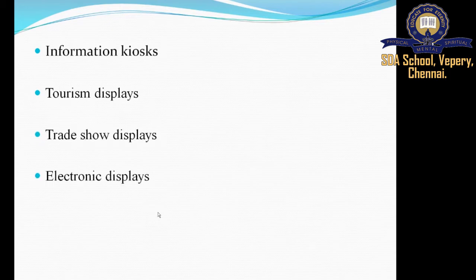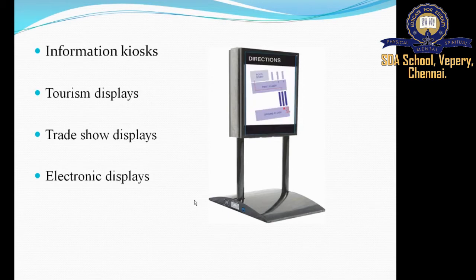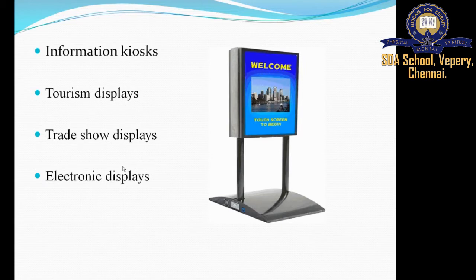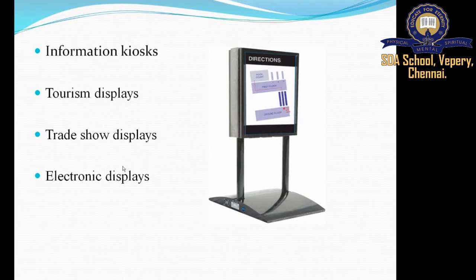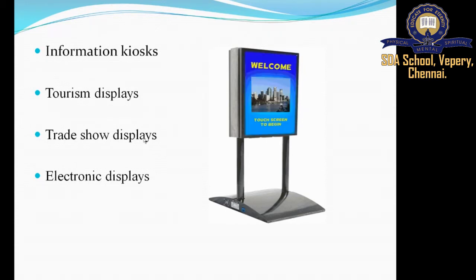Examples include information kiosks, tourism displays, trade show displays, and electronic displays. Tourism displays show route maps and the next available locations to travel. Trade show displays show prices of particular products during trading or bargaining. Electronic displays show currently available new products.